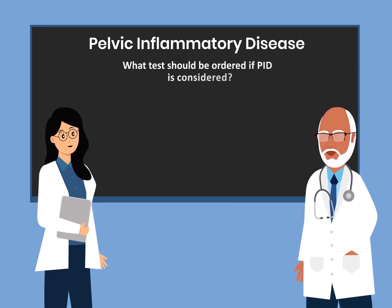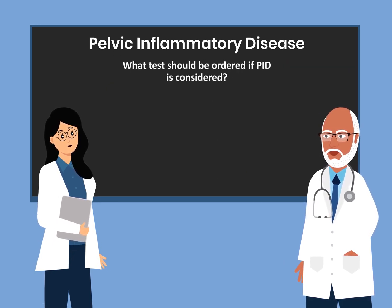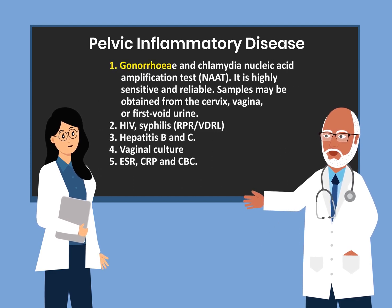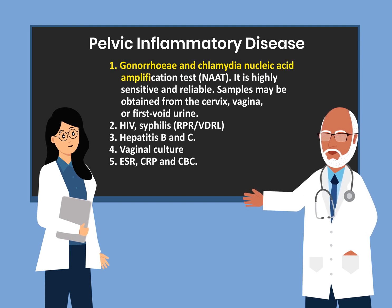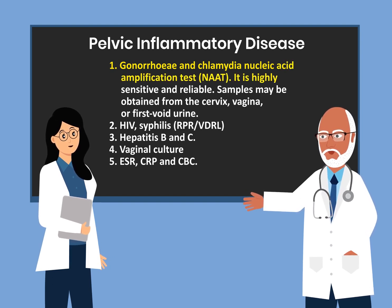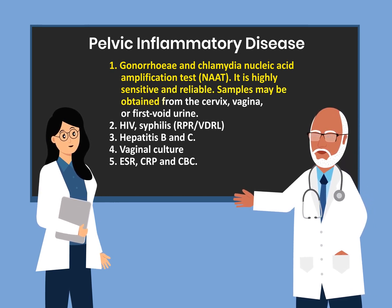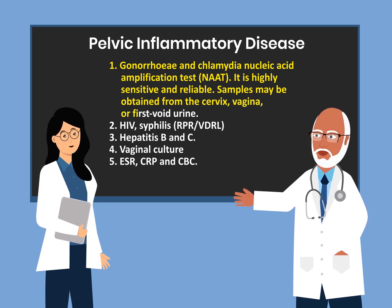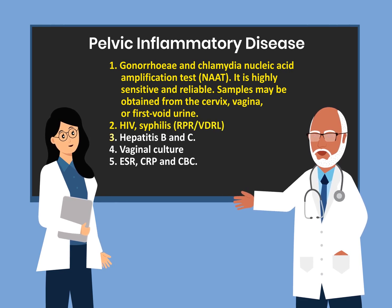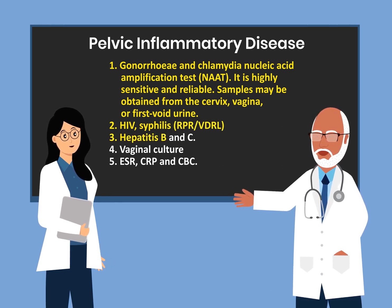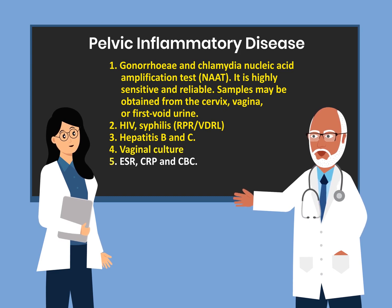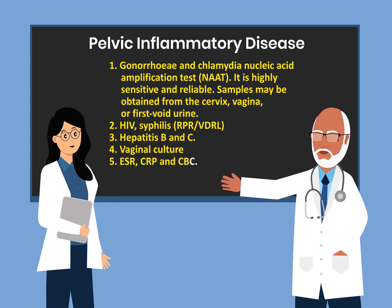What tests should be ordered if PID is considered? First, do gonorrhea and chlamydia nucleic acid amplification tests — the NAAT. It is highly sensitive and reliable. Samples may be obtained from the cervix, vagina, or first void urine. Then HIV and syphilis, hepatitis B and C, vaginal culture, and the ESR, CRP, and CBC.